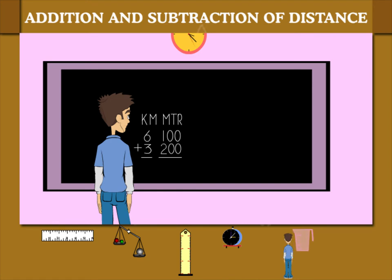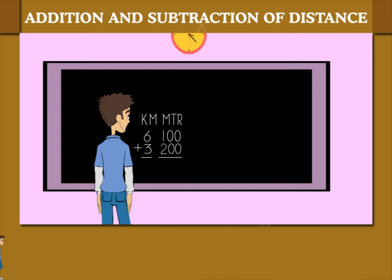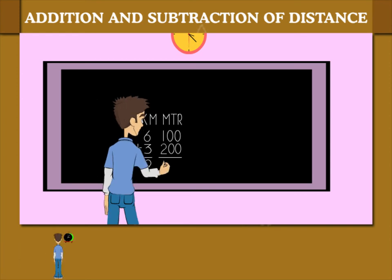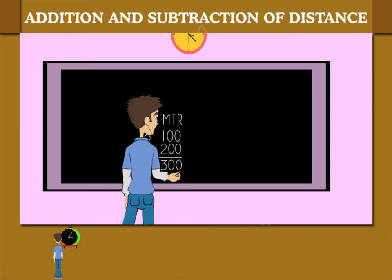Sammy adds the meters and kilometers together to get 9 kilometers and 300 meters.